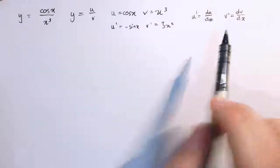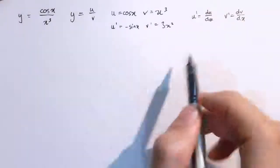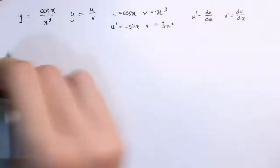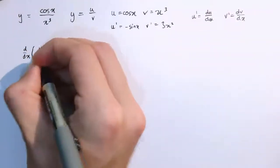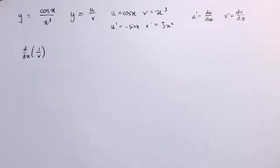But we're not worried about this example, I want to prove the quotient rule in general. So to start off with, I'm going to try and differentiate 1 over v, and then we'll differentiate u over v in the next step.